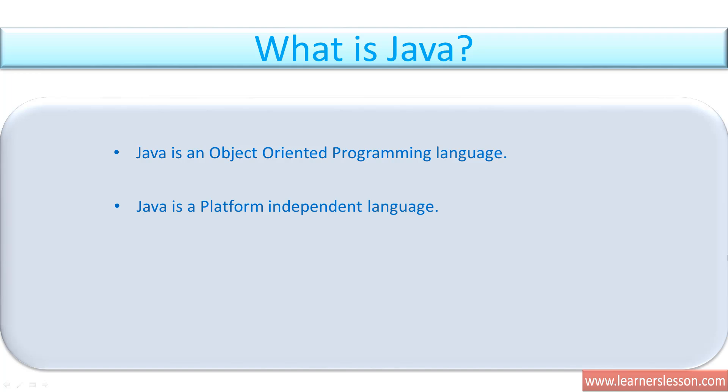Java is a platform independent language. Say you are writing a Java code in your Windows system and you want to give the same program to your friend who is using a Mac OS. Is it possible? Yes, absolutely. It's possible because Java is a platform independent language, so it's independent of the operating system it's running on. You can code in Linux and run it in a Windows system or Mac OS — it's definitely possible.